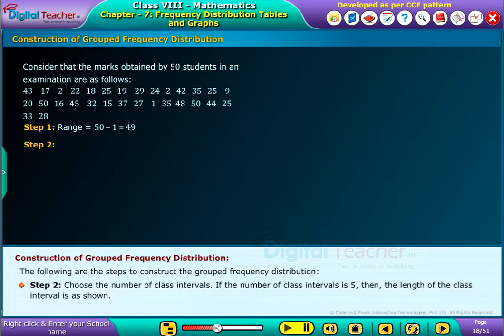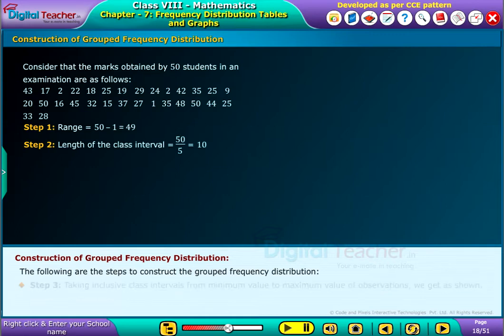Step 2: Choose the number of class intervals. If the number of class intervals is 5, then the length of the class interval is as shown.